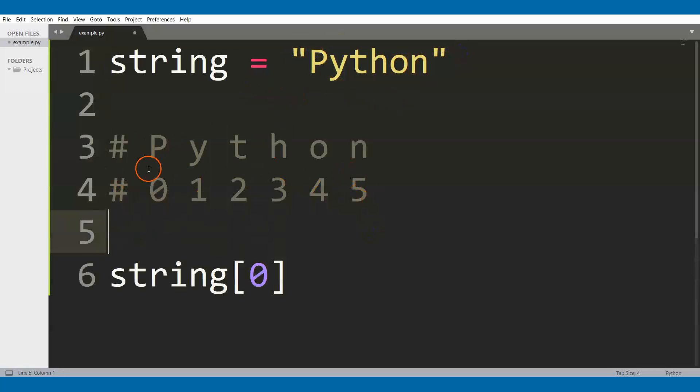we can see that the character at index 0 is the letter P, so this will give us the first character of the string, the letter P, at index 0.